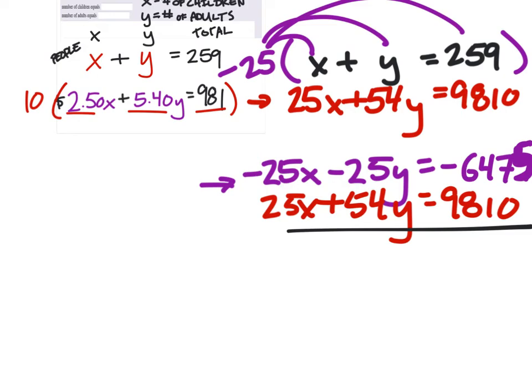Now we're going to add each of these columns together, which hopefully you will notice. Negative 25 plus that 25x. These cancel out and become zero. Which is what we wanted. That's why we call it elimination. We eliminated it.